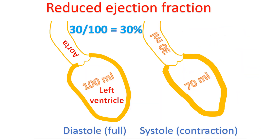This picture illustrates what reduced ejection fraction means. Ejection fraction is the fraction of blood which is pumped out from the left ventricle when it contracts after filling up. The period of relaxation is known as diastole, in which the ventricle fills, and contraction is known as systole. Normal ejection fraction is around 60 to 70 percent. When it is reduced below 40 percent, it is known as heart failure with reduced ejection fraction.